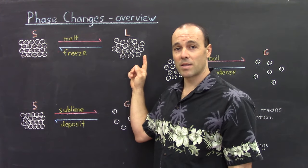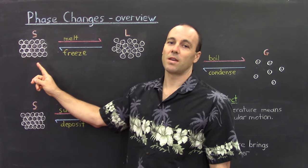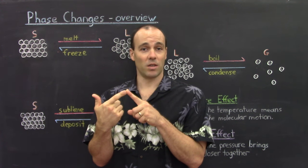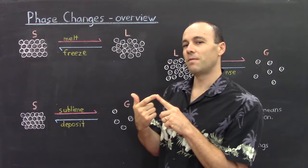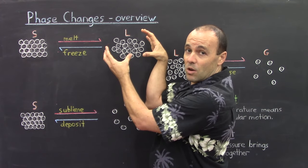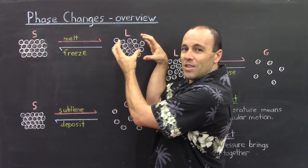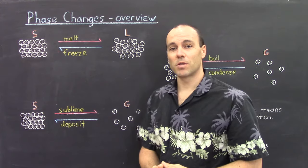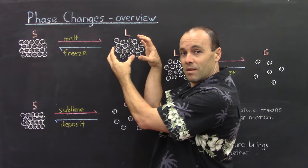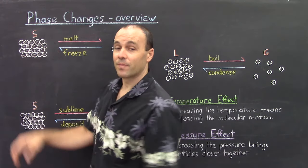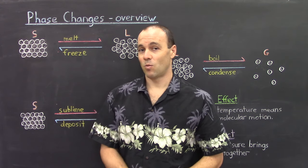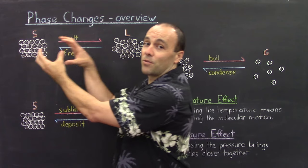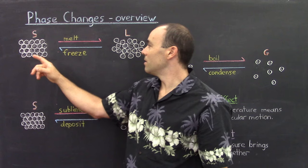Similarly, cooling a liquid back down means slowing those particles back down, and the interaction forces take over, and the liquid will freeze back into a solid. But another way the transition can occur is by changing the pressure. If you increase the surrounding pressure of a liquid, you're really pressing the particles closer together, just enough to lock them into the configuration of a solid. And that's what happens for most substances. We'll see water is an exception — most substances increasing the surrounding pressure will cause freezing, and decreasing the pressure can cause melting.